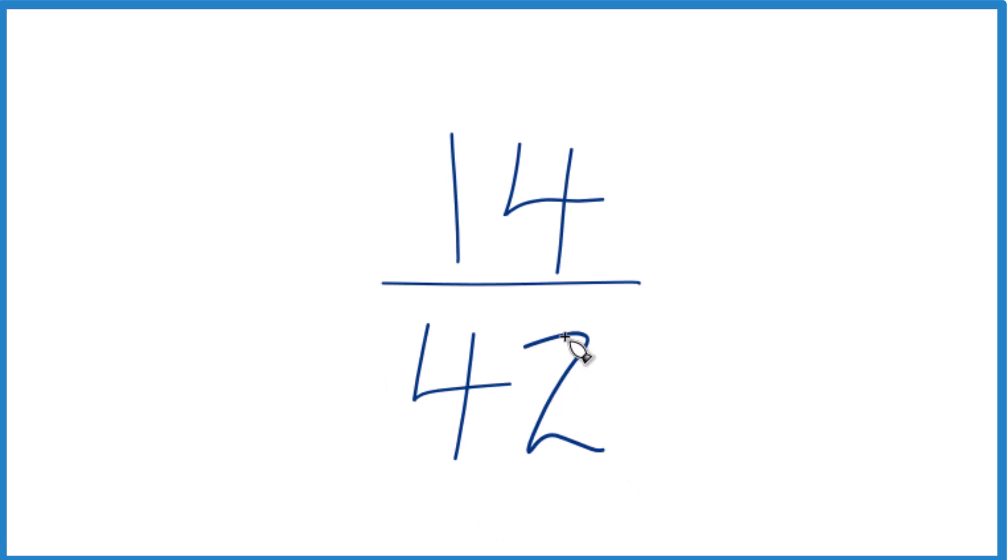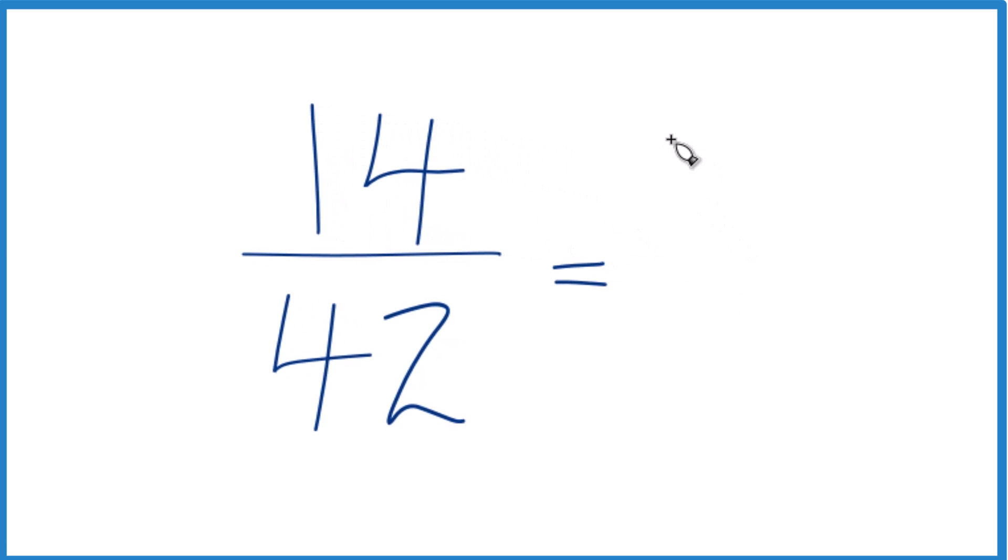When I look at 14 and 42, since they're both even, I'm just going to divide both by 2. That's usually a pretty easy way to start. 14 divided by 2 is 7, and then 42 divided by 2, that's 21.